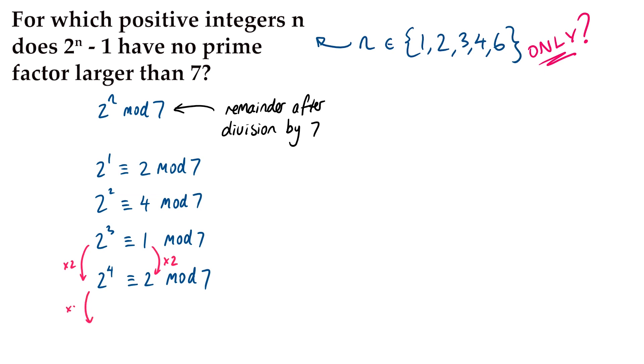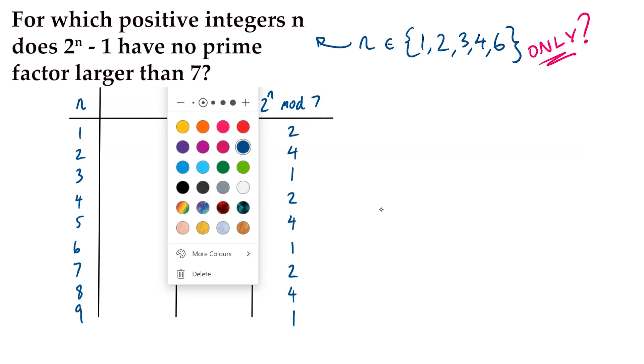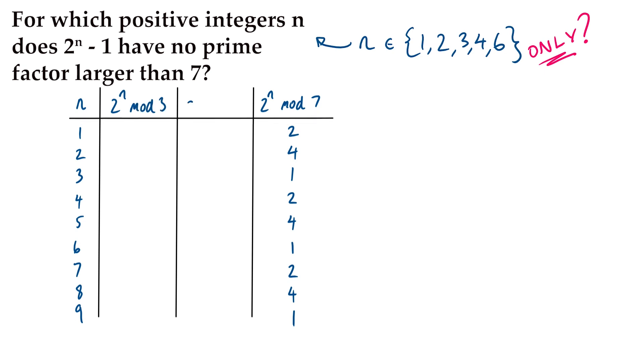And this cycle of remainders 2, 4, 1 is going to keep on repeating. 2, 4, 1, 2, 4, 1. And that's really useful for our problem, because we can look at similar cycles, mod 3 and mod 5, and this will help us to predict for which values of n 2 to the n minus 1 will and will not be divisible by 3, 5, and 7. Because if 2 to the n minus 1 has no prime factor larger than 7, it must be divisible by 3 and or 5 and or 7. It can't be divisible by 2 because it's always going to be odd.